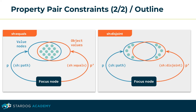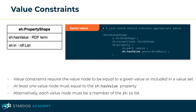The value constraints require a value node to be equal to a given value or included in a value list. Thus, at least one value node should match the 'hasValue' property. Alternatively, each value node is required to be a member of the reference list supplied by the 'IN' property. In the example, a rock album must specify at least the genre 'rock music'.